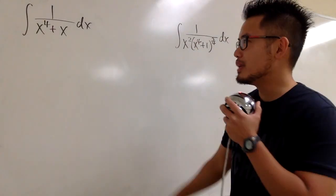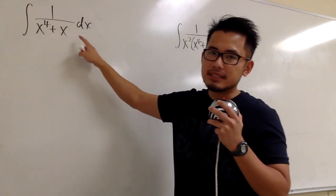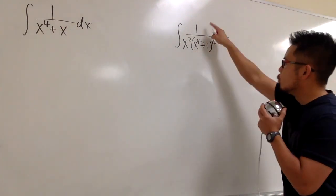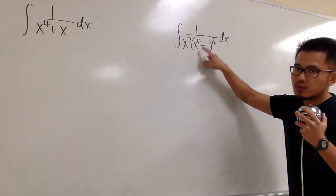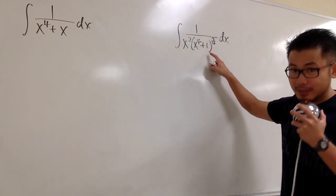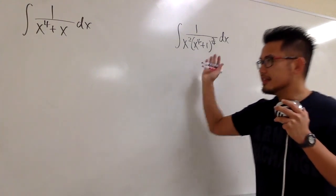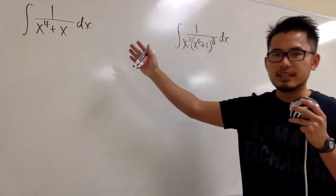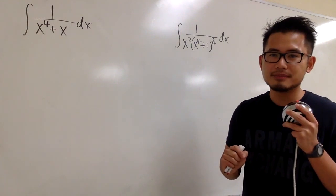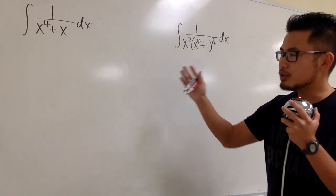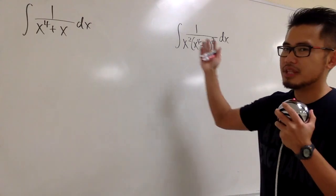Another integral battle! Here we have the integral of 1 over x to the fourth power plus x. The other one: the integral of 1 over x squared times the quantity x to the fourth power plus 1, raised to the 3 over 4 power. You may be wondering, these two integrals look totally different. Why did I put them together in this video? Please pause the video and give them a try.